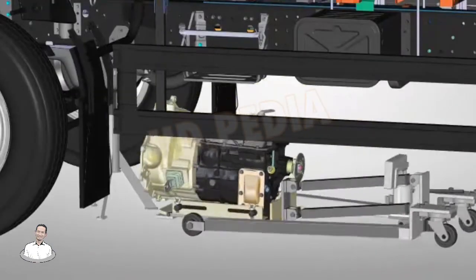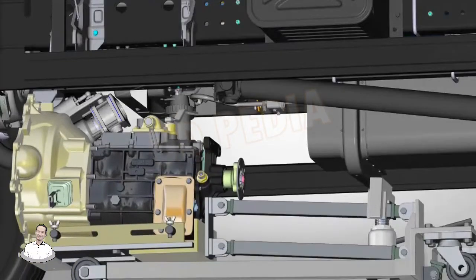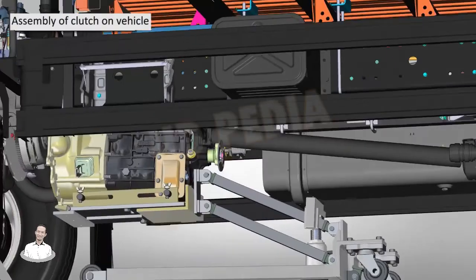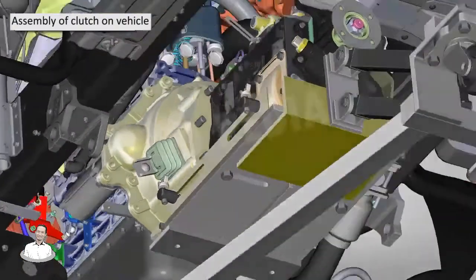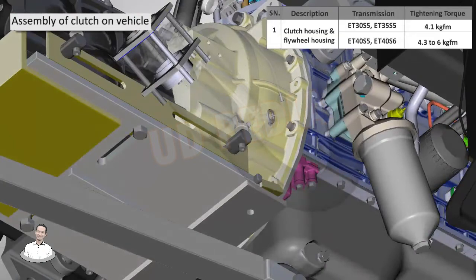Assemble along with the transmission using a trolley. Place and tighten all the bolts of the clutch housing.